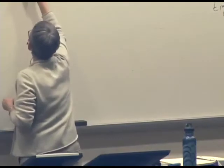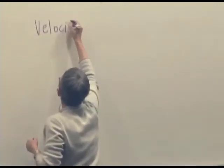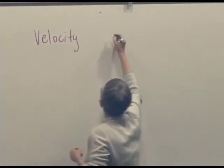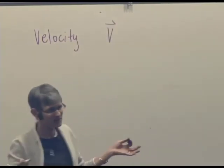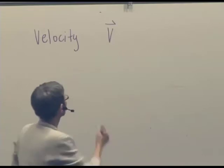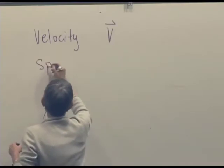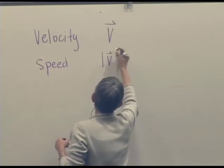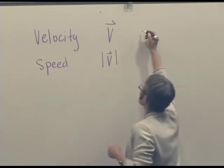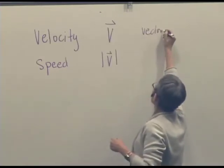So velocity is a vector in physics. So it has a magnitude and a direction. The magnitude of the velocity of something is the speed. So this is a vector and a scalar.